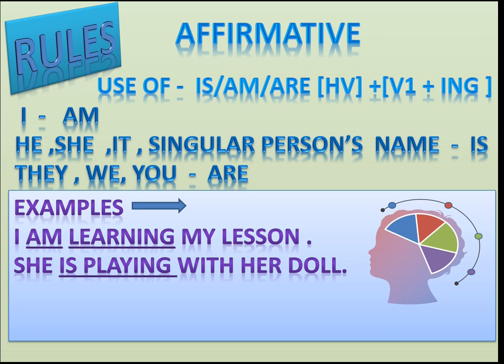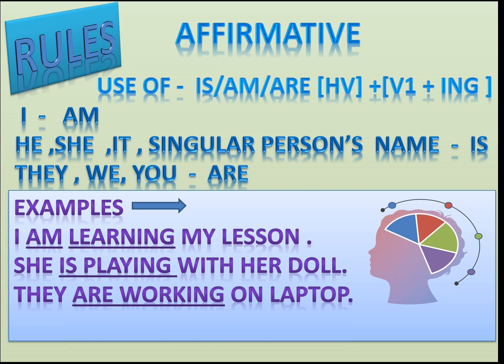Next example: 'She is playing with her doll.' Here 'is' is the helping verb, 'play' is the first form of the verb, and -ing is added. Next: 'They are working on laptop.' 'They' is a plural pronoun, so we use 'are' and the first form of the verb plus -ing — therefore 'working.'